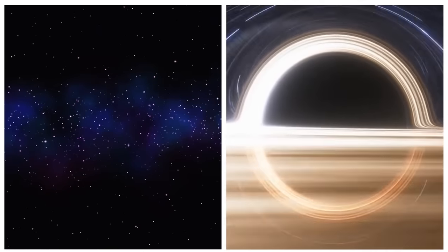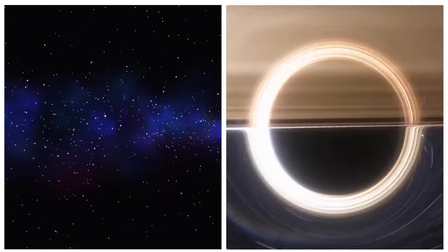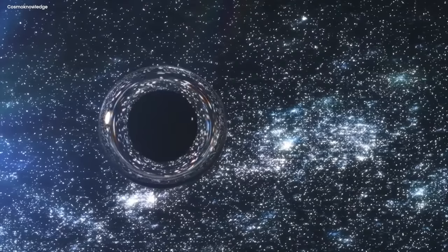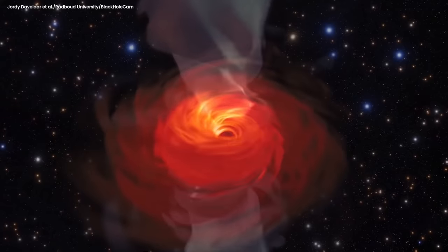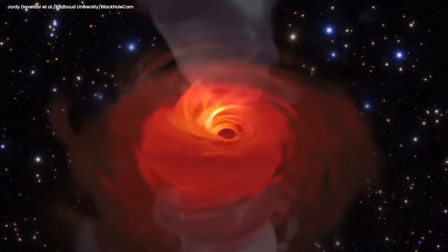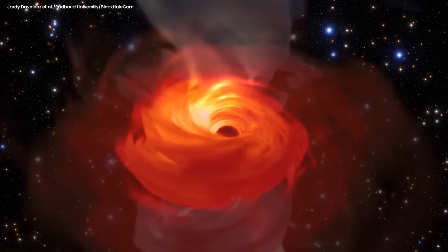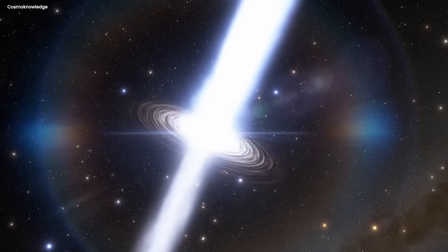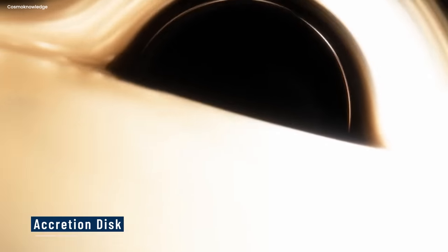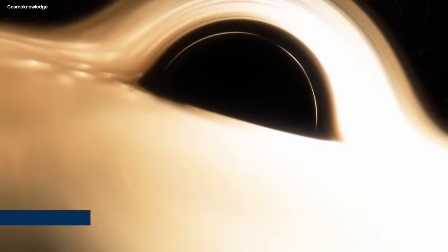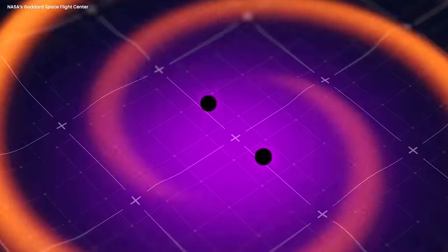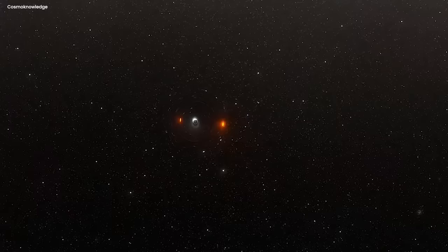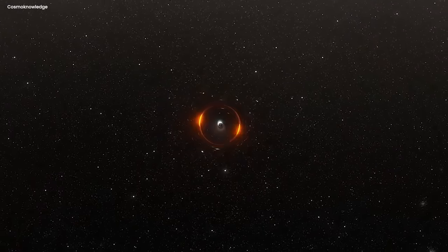When you are unable to directly observe one of the primary components under scrutiny, you must rely on the effects it has on its surroundings. As interstellar matter crosses the event horizon, it becomes ensnared within the relentless gravitational pull of the black hole. The matter's escape is prevented by the overpowering gravitational force. As the matter spirals closer to the black hole, it forms an accretion disk due to the angular momentum, causing it to orbit the black hole before eventually being consumed. It remains trapped within the black hole's gravitational clutches as questions about the inner workings of black holes persist.